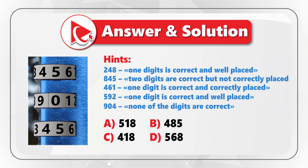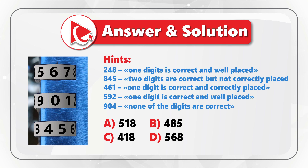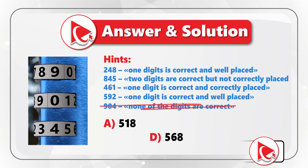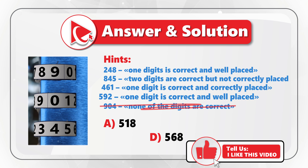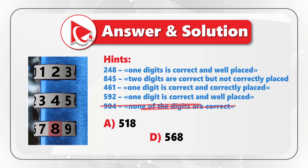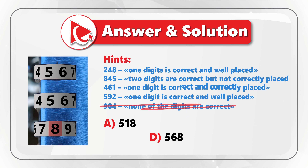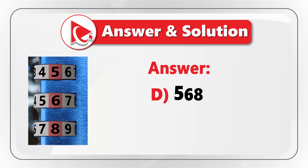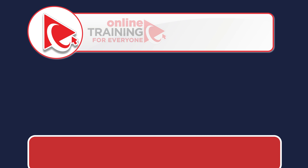You solve this problem through elimination. Starting with hint 5 — the most helpful — since in combination 904 none of the digits are correct, we can eliminate choices B and C because both contain digit 4, which is incorrect. Continuing elimination: from hint 1, digit 8 is the one correctly placed. From hint 2, digits 8 and 5 are correct but not correctly placed. From hint 3, digit 6 is correct and correctly placed. From hint 4, digit 5 is correct and well placed. Based on this, the correct answer is Choice D — 5, 6, 8.